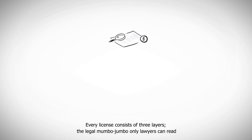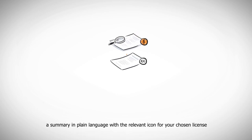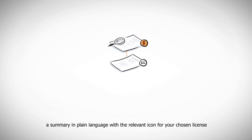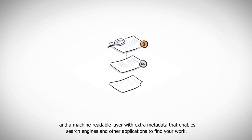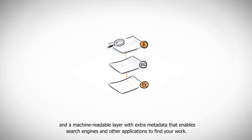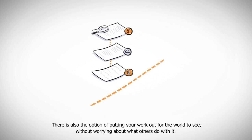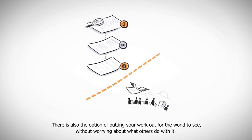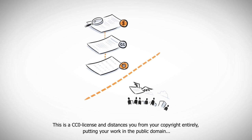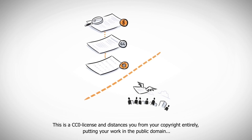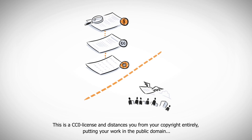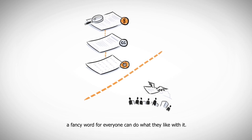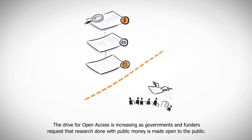Every license consists of three layers: the legal text only lawyers can read, a summary in plain language with the relevant icon for your chosen license, and a machine-readable layer with extra metadata that enables search engines and other applications to find your work. There is also the option of putting your work out for the world to see without worrying about what others do with it. This is a CC0 license and distances you from your copyright entirely, putting your work in the public domain — a fancy word for everyone can do what they like with it.